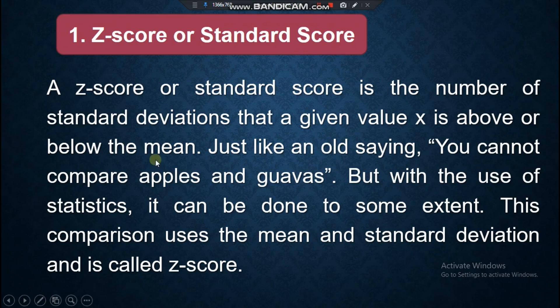A Z-score or standard score is the number of standard deviations that a given value X is above or below the mean. Just like an old saying, you cannot compare apples and guavas, but with the use of statistics it can be done to some extent. This comparison uses the mean and standard deviation and is called Z-score.